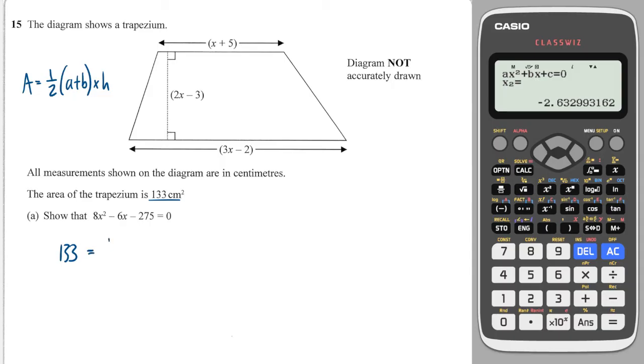So, 133 is also equal to one half of the two parallel sides, so this plus this. So, when I add those two together, I get 4x plus 3, and then times by the height, or the gap between them, which is 2x minus 3.